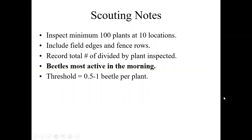When scouting for cucumber beetles, inspect a minimum of 100 plants at 10 different locations. Be sure to include field edges and fence rows, because that's often where beetles are moving in from. Record the total number of adult beetles and divide by the number of plants inspected. The beetles are most active in the morning — they all but disappear in the afternoons, hiding in the soil underneath clods and leaves. Try to get to those sites early in the morning.